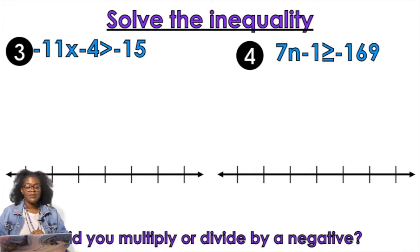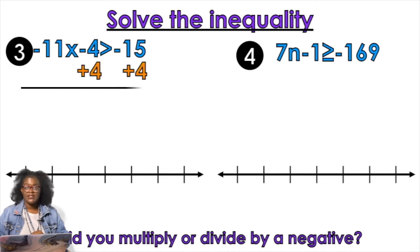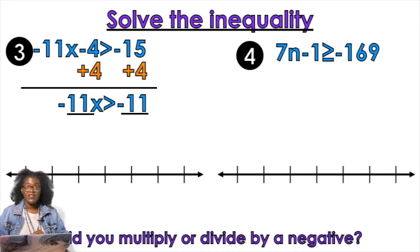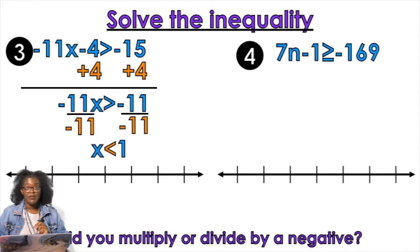Next: -11x - 4 > -15. We add 4 to both sides and get -11x > -11. Then we divide by -11 on both sides. Am I dividing by a negative on both sides? Sure am — so that means I flip my symbol. x < 1.